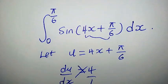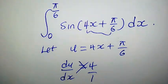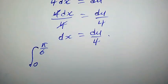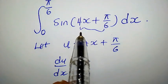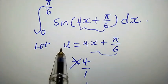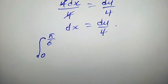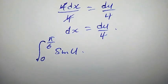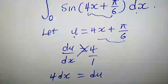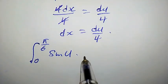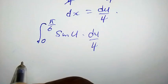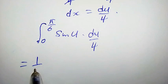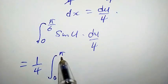Now back to our integral. We have the integral from 0 to π/6 of sin(4x + π/6) dx. We replace 4x + π/6 with u, and we replace dx with du/4. So we have the integral of sin(u) · (du/4). We can pull out the 1/4 since it is a constant, giving us (1/4) times the integral from 0 to π/6 of sin(u) du.